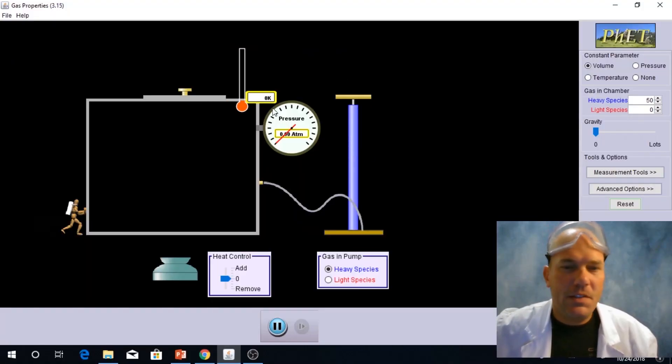All right, so let's take a look at what we have going on here. We have a chamber here that we can manipulate the volume of. We have a thermometer to monitor temperature, and then we also have a pressure gauge, and it is displayed in atmospheres. Remember, one atmosphere is equal to 760 millimeters of mercury, which is also equal to 760 torr.